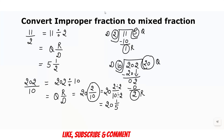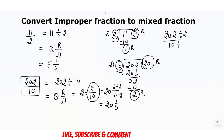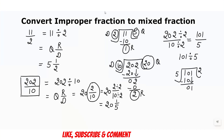If you don't want to simplify after converting, you can simplify before. Check if 202 by 10 can be simplified: dividing both by 2 gives 101 over 5. Then 101 divided by 5 gives quotient 20 and remainder 1, with divisor 5. So the answer is 20 and 1 by 5 — the same result. Whichever way you follow, your answer will always be the same.